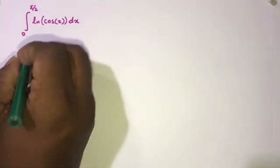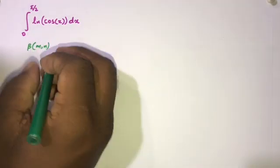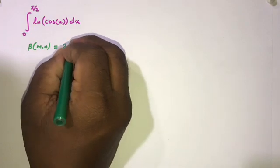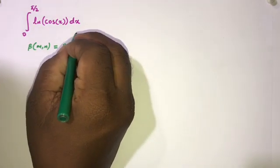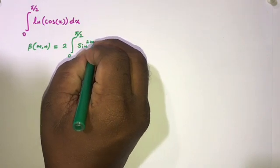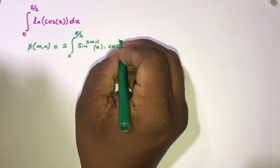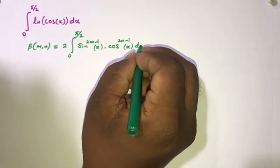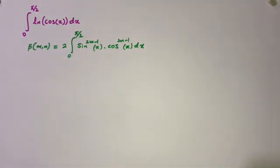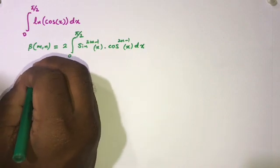First we know the definition of the beta function. We can write β(m, n) is equal to 2 times the integral from 0 to π/2 of sine to the power (2m−1) of x times cosine to the power (2n−1) of x dx.